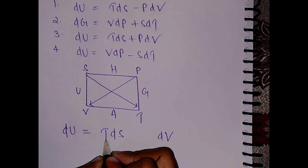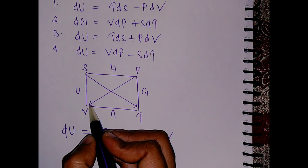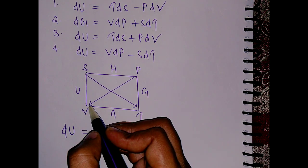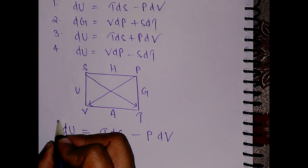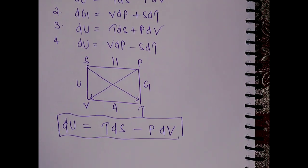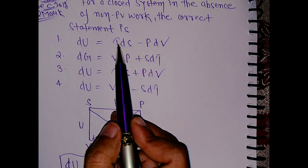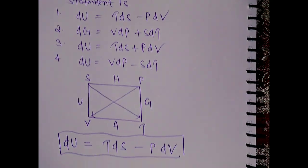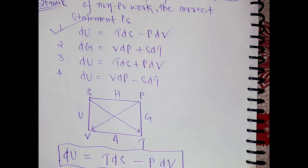From S the arrow is going to T, so write here TdS. Now from V the arrow is ending on V from this P on the opposite side, that means it will become minus PdV. So this is dU equals to TdS minus PdV. Fortunately, the first is the correct answer.